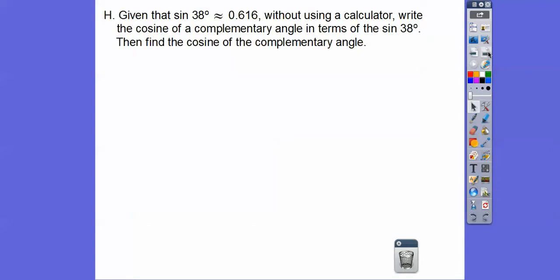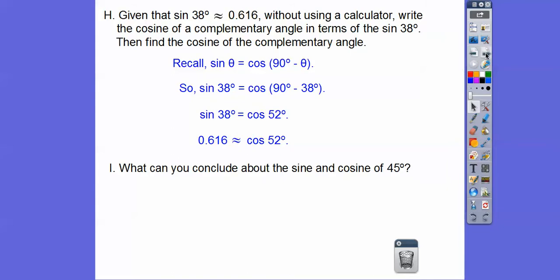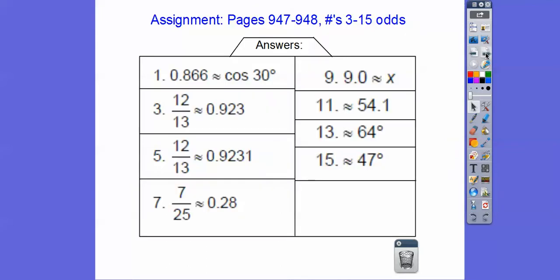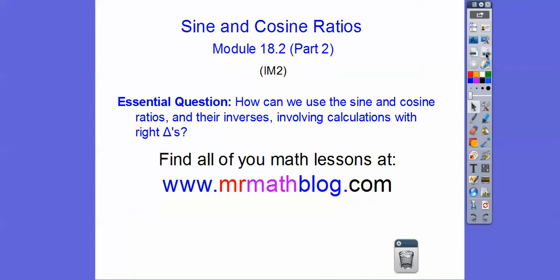So given that the sine of 38 is 0.616, without using the calculator, write the cosine and the complementary. The sine of theta equals the cosine of its complement. So the cosine of 38 degrees is going to be 52 degrees. The sine of 38 equals the cosine of 52, and since the sine of 38 equals 0.616, then the cosine of 52 also equals 0.616. What can you conclude about the sine and cosine of 45? The complements of 45 is 45, so they're equal to each other.